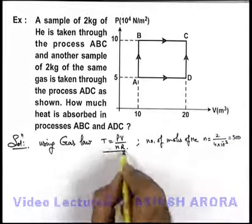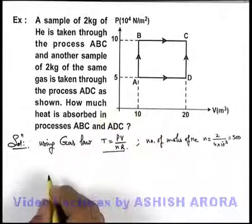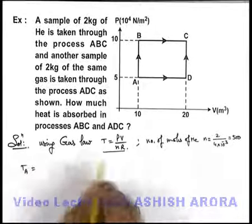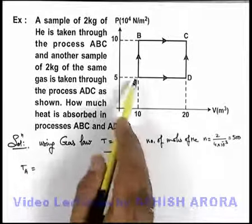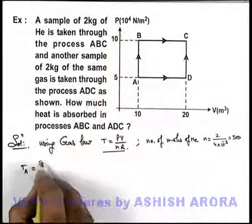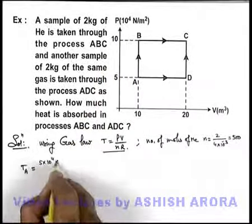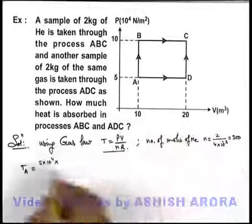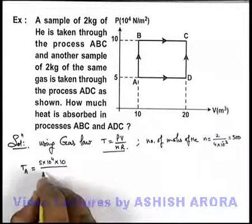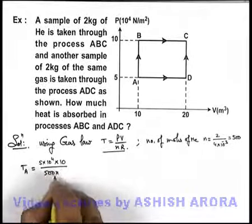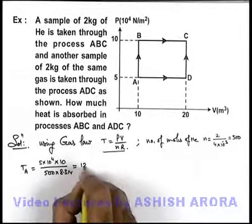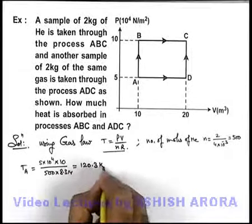Now using gas law we can find out the temperature of the gas in different states. The temperature in state A can be written as PV upon nR. In state A, pressure is 5 × 10⁴ and volume is 10 m³, divided by 500 multiplied by R = 8.314. On simplifying, this gives us 120.3 Kelvin.